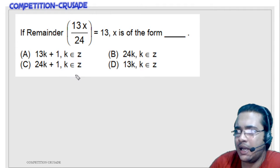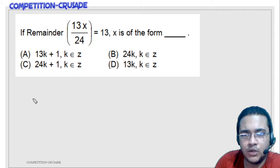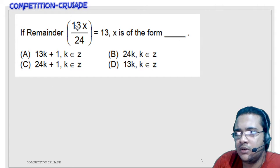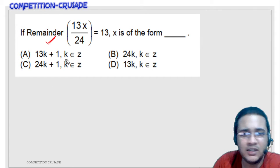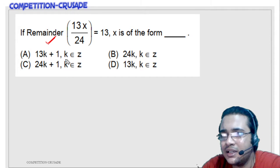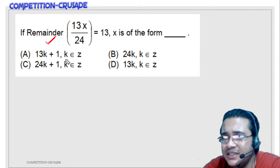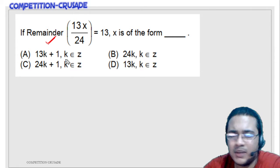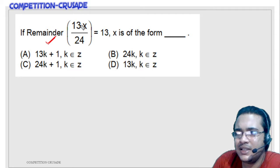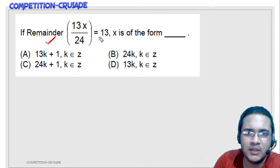I hope you have remembered the division lemma that I just told you in the previous video. Dividend is equal to... So this is a form in which you can get questions. The form can actually scare you: remainder 13x by 24 is 13, then x is of the form blank. But all that this entire thing is saying is that when 13x is divided by 24 it leaves out a remainder of 13.